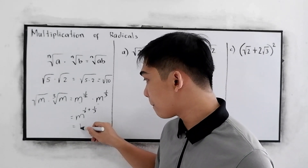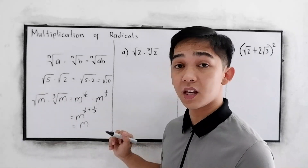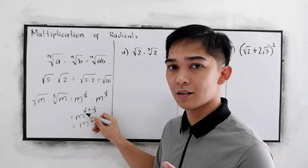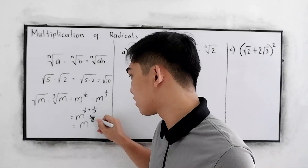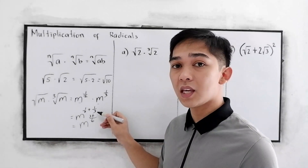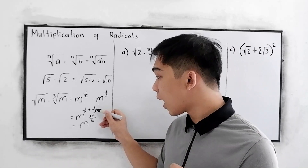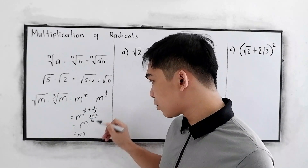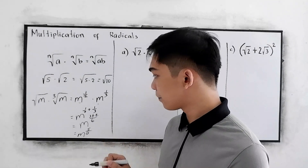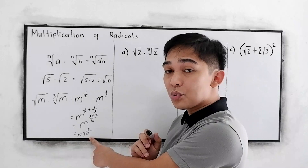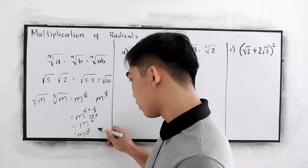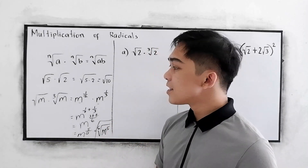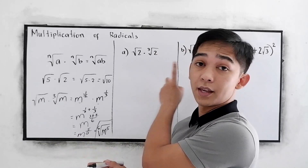So with the same base m, we need to add 1/2 plus 1/3. The LCD of 2 and 3 is 6. So 6 divided by 2 is 3, times 1 gives us 3; and 6 divided by 3 is 2, times 1 gives us 2. So 3 plus 2 gives us 5 over 6. We can write this in radical form: the equivalent is the 6th root of m raised to 5.